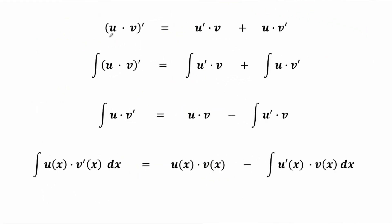Let's say we have two differentiable functions u and v. Consider the derivative of the product u times v by the product rule. The derivative is equal to the derivative of the first function times the second function, plus the first function times the derivative of the second function.